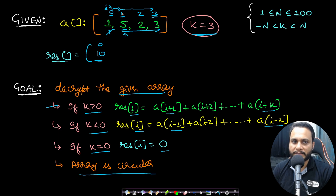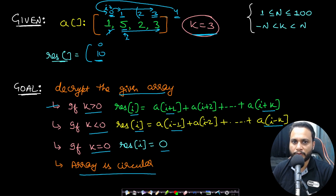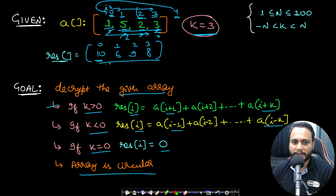For index 1, we add all values from index 2 to index 4. Since index 4 doesn't exist, we cycle back to index 0. So we find the sum of indices 2, 3, and 0: 2 plus 3 plus 1 equals 6. For index 2, we add 3 plus 1 plus 5, giving 9. For index 3, we add 1 plus 5 plus 2, giving 8. So our resultant array is [10, 6, 9, 8].